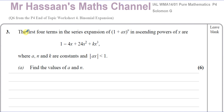We are told that the first 4 terms in the series expansion of (1 + ax)^n in ascending powers of x are 1 minus 4x plus 24x² plus kx³, where a, n, and k are constants and the modulus of ax is less than 1.